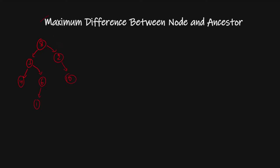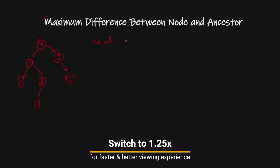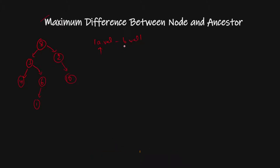Hello everyone, today we are going to solve the Maximum Difference Between Node and Ancestor problem. In this problem, we have a binary tree and we have to find the maximum value of |A - B|, where A is our ancestor and B is our descendant.